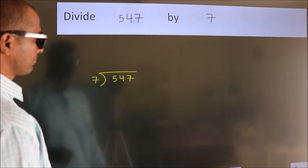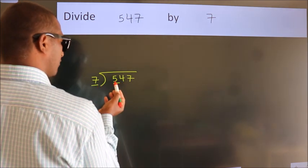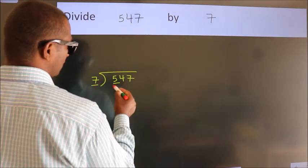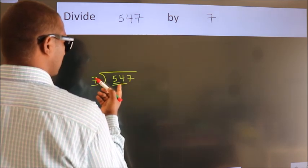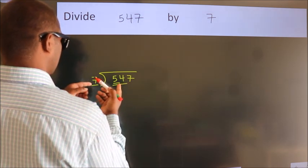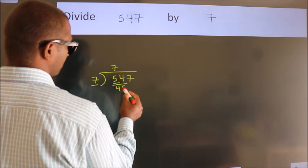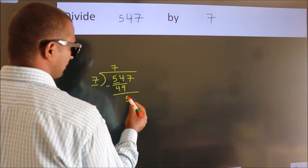Next, here we have 5, here 7. 5 is smaller than 7. So we should take two numbers, 54. A number close to 54 in the 7 table is 7 times 7 is 49. Now we should subtract, we get 5.